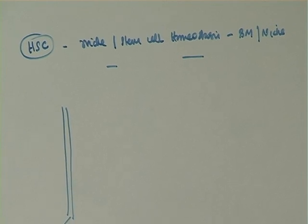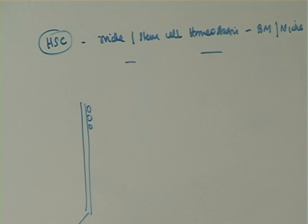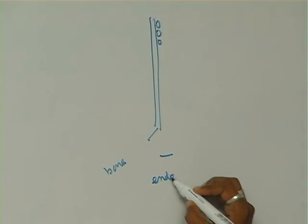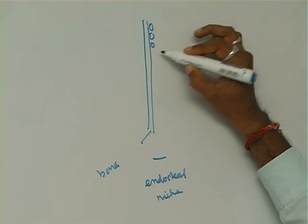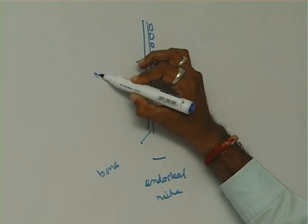This is the bone and this particular niche is called the endosteal niche. In the endosteal niche there will be cells that are in fact N-cadherin positive.